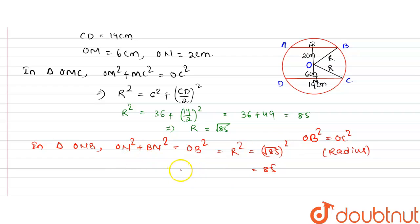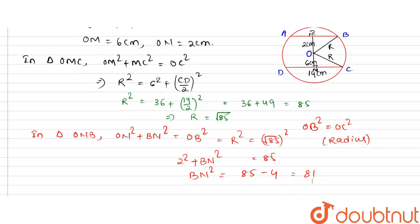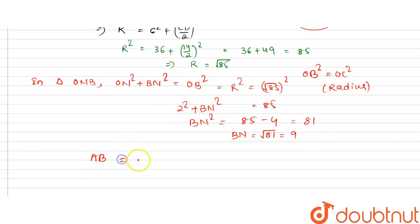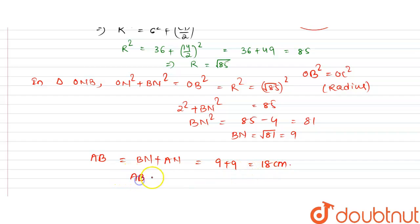BN² = 85 − 4 = 81, therefore BN = √81 = 9. So AB = BN + AN. Since N is the midpoint of AB, BN equals AN, giving AB = 9 + 9 = 18 centimeters.